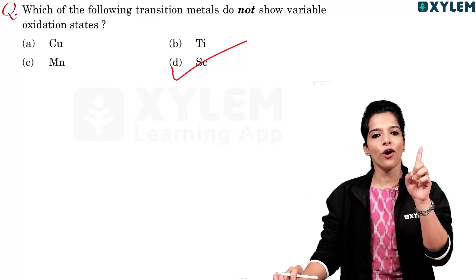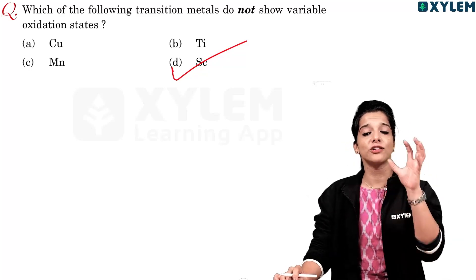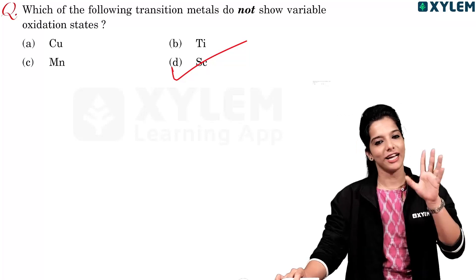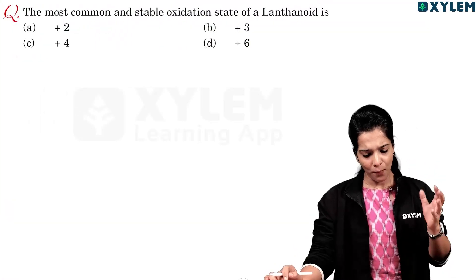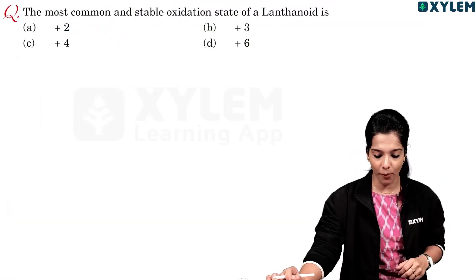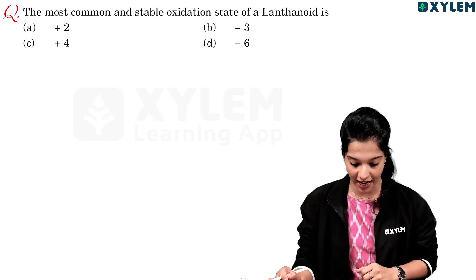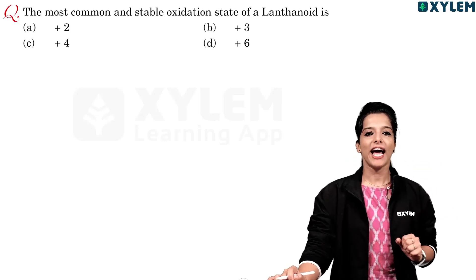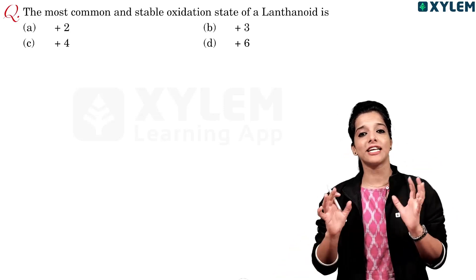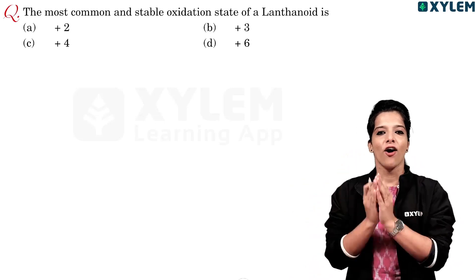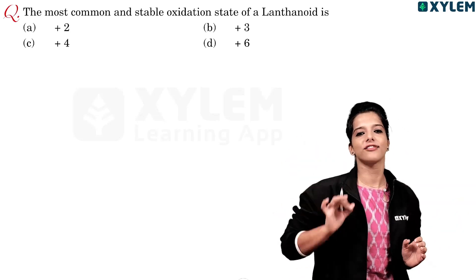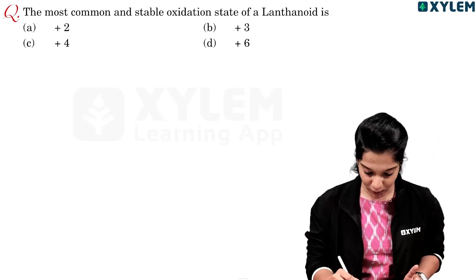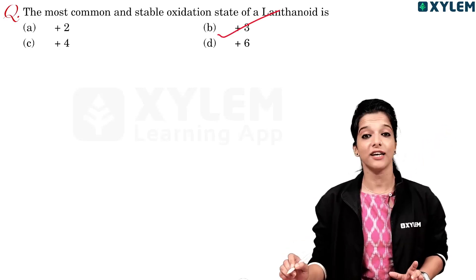Note that zinc's +2 oxidation state is also fixed. Next question: the most common and stable oxidation state of a lanthanoid is dash. Lanthanoid metals have a stable oxidation state of +3. Option B is +3.